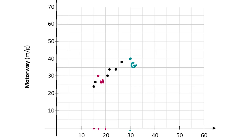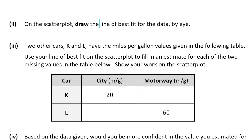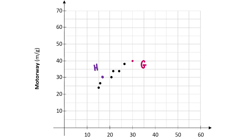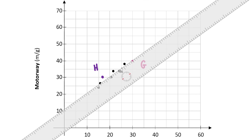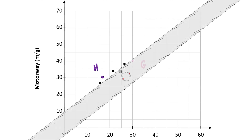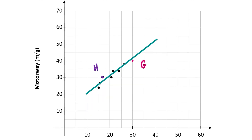Now that we've done part one, we move on to part two where we're asked to draw the line of best fit for the data on the scatter plot by eye. For the Leaving Cert, when asked to draw the line of best fit by eye, you want to draw a line that is equidistant between the points — the same distance above it as below it. Getting a ruler, this line here looks about right, with points above and below it at roughly equal distances.